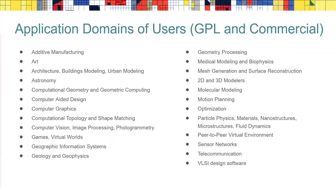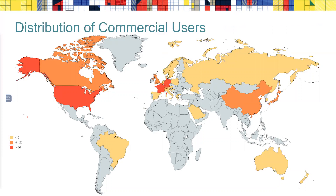It's amazing to see the diversity of academic users on the 'projects using CGAL' page on the CGAL website, matched by the diversity of commercial users — though unfortunately only few customers allow us to mention their name. Geometric computing is geographically ubiquitous: commercial users are distributed roughly one third in North America, one third in Europe, and one third across Asia, Oceania, and South America.